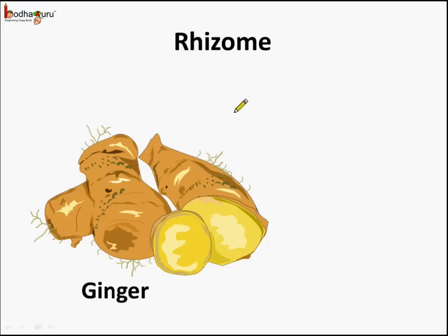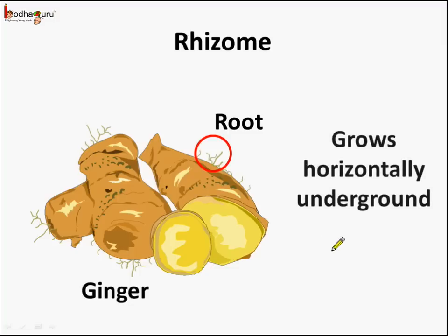What about ginger? Ginger is a rhizome. It is also an underground stem which has small leaves and roots, and it grows horizontally underground. So we can say ginger is an underground stem called a rhizome. The underground stem gets modified to store food in different ways such as rhizome, bulb, or tuber.